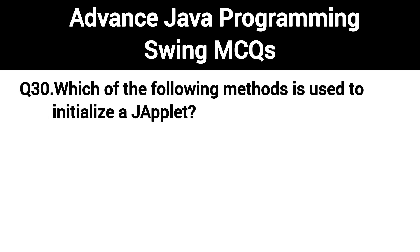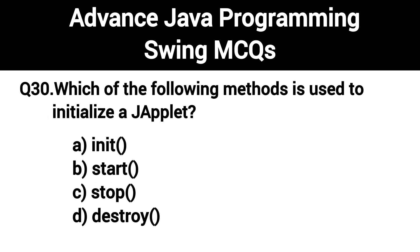Q30. Which of the following methods is used to initialize a JApplet? The right answer is Option A: init method.